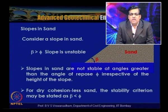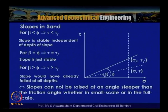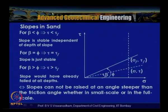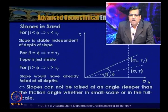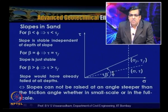Let us look at how this can be explained using a tau-sigma plot. On the y-axis is tau and on the x-axis is sigma; this is the failure envelope and this is the friction angle — the maximum friction angle the soil can take. Let beta be the slope inclination. As long as beta is less than phi, the slope will be stable.